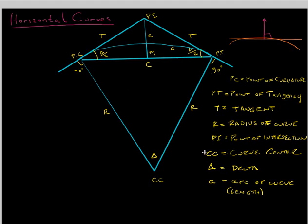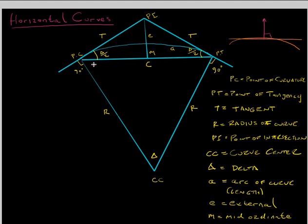E is your external — that's the distance from the PI to the point on the curve halfway along the arc. M is the mid-ordinate. C is the chord — the straight-line distance from your PC to your PT. You sometimes hear the chord of a circle; this is a chord of a circle right here.